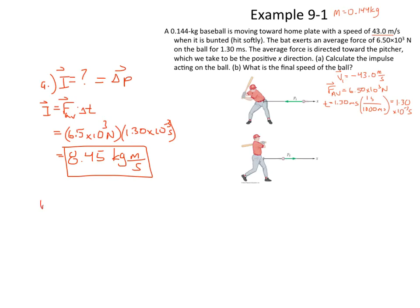Let's now find part B, the final speed of the ball. The final speed, v_f, equals what? That's what we're solving for right there for part B. Well, we do know that the initial velocity, v_i, equals -43.0 meters per second.